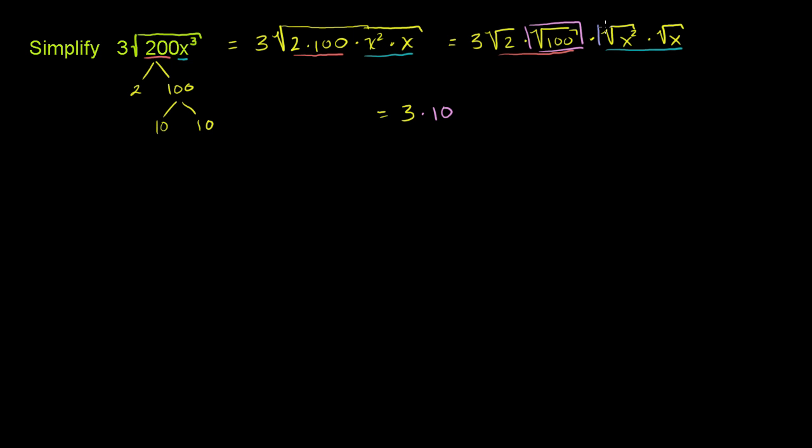And then what is the square root of x squared? Well, it's just x. x times x is x squared. So times x. And then we have to deal. So we've dealt with that,